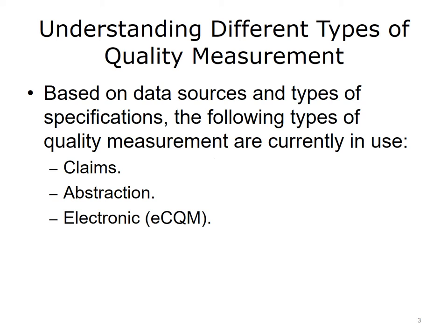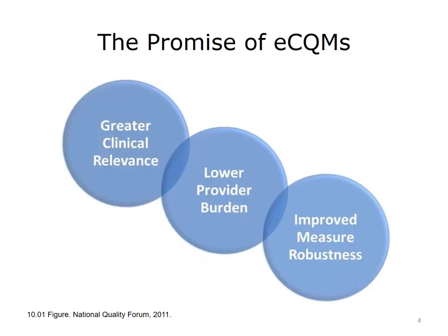Retrospective chart abstraction by dedicated staff is rich in clinical content, but is expensive and is generally unable to scale. While HIT can be leveraged as a data source for many types of quality measures reporting, eCQMs are an end-to-end, completely electronic system where all components are digitally specified. eCQMs promise increased accuracy, assuming there are no issues with data quality, and greater clinical relevance while reducing the burden of manual data collection through abstraction.